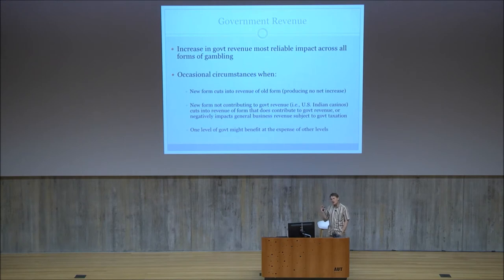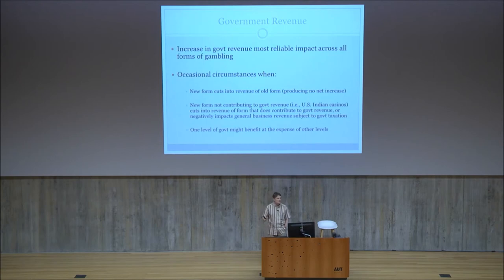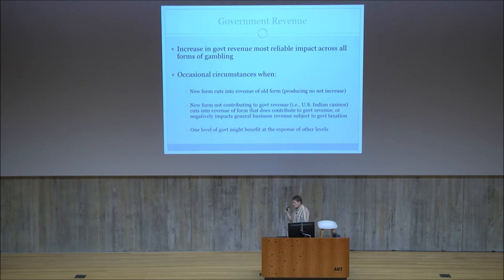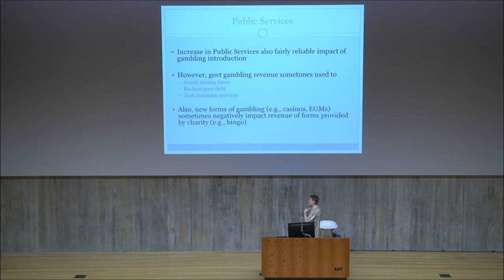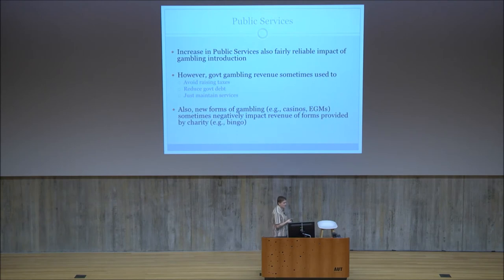Government revenue — this is actually the most reliable impact of gambling, which is probably why governments are so enamored with it. Increase in government revenue generally occurs across all forms of gambling. There are occasional circumstances where a new form cuts into the revenue of the old form — U.S. Indian casinos are the best example — and depending on revenue distribution, one level of government might benefit at the expense of others. But the reality is governments almost always win with gambling, and at least a maintenance of public services is also a fairly reliable impact.